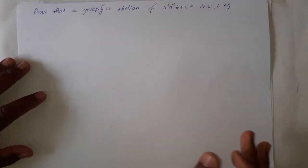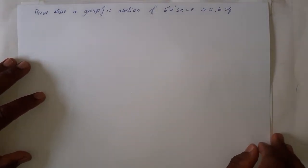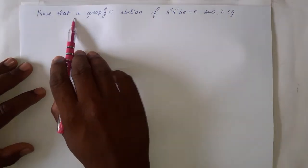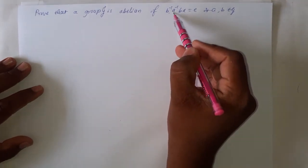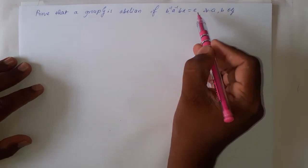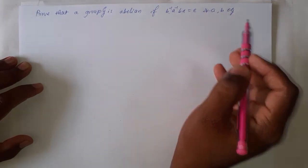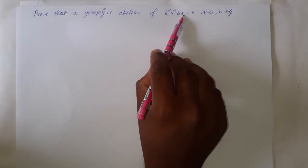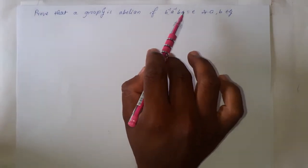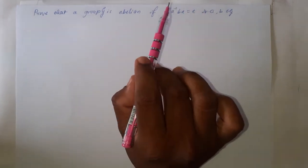Here is the first theorem of this class. Prove that a group G is abelian if B inverse into A inverse into B into A is equal to E, where E is the identity element of G, for all A, B belonging to G. If this condition is true in a group G, then G is abelian. That is the meaning of this theorem.